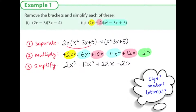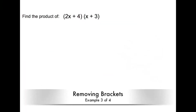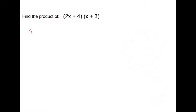Now, this is how we do these two questions. We're going to show two more examples. If you wish to pause the video, you could do that as well. Find the product of 2x plus 4 and x plus 3. The first step is that we want to separate — we want to multiply 2x and separately the plus 4 by each of the terms in the second bracket, x plus 3. So we write this as 2x to be multiplied by x plus 3, and plus 4 to be multiplied by x plus 3.